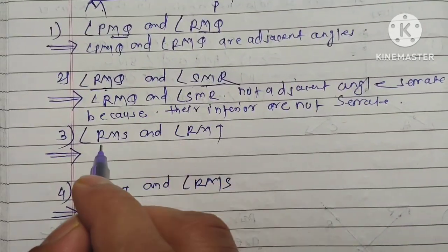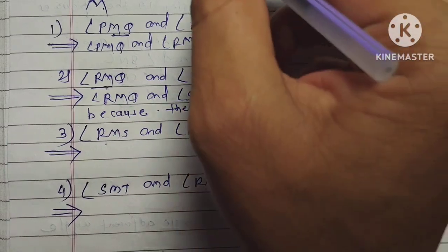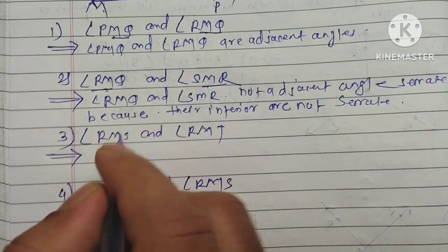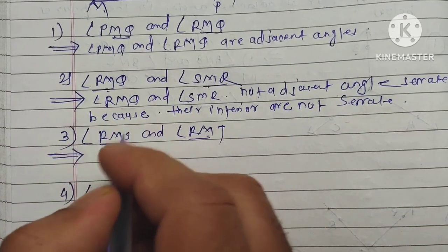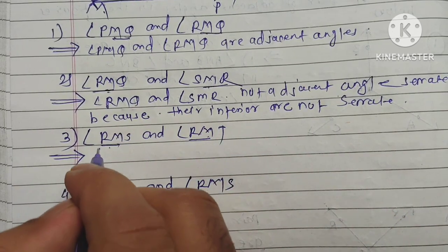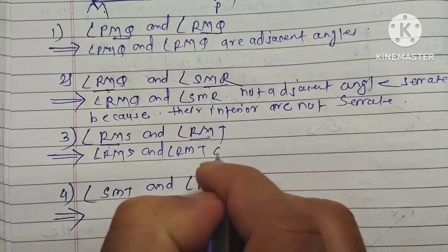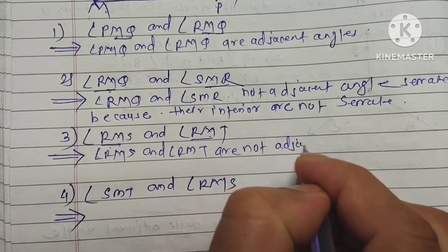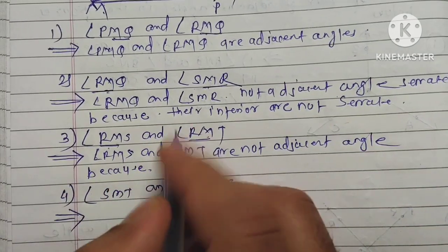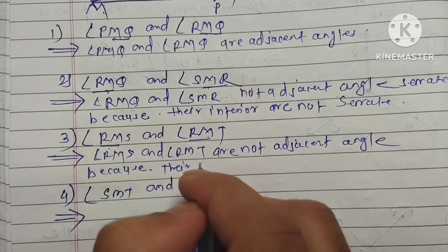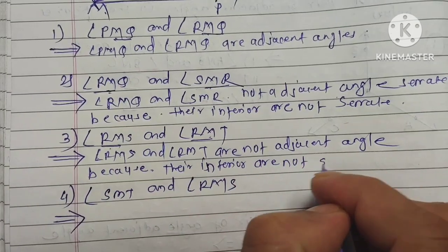Let's go to the next pair. Angle RMQ and angle RMQ — looking at the figure, these have a common arm and common vertex, but they are not adjacent angles because their interiors are not separate.